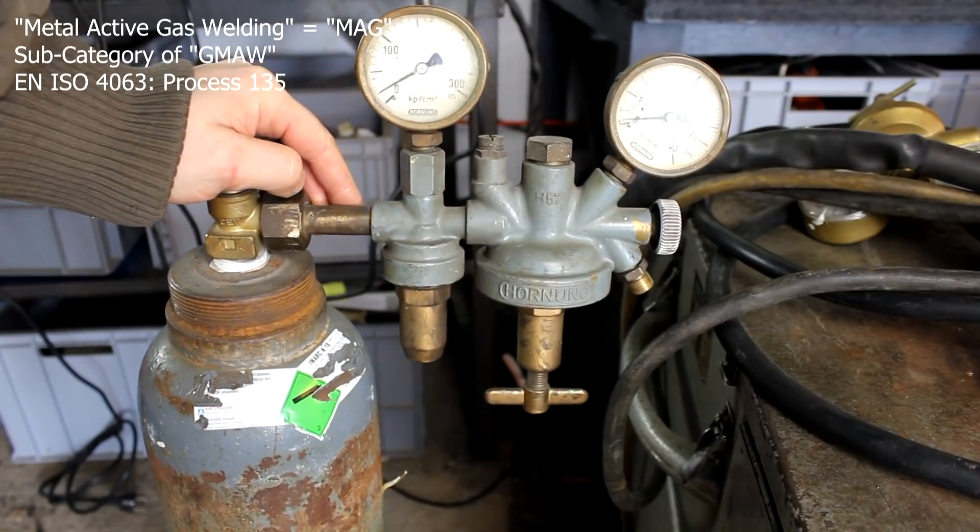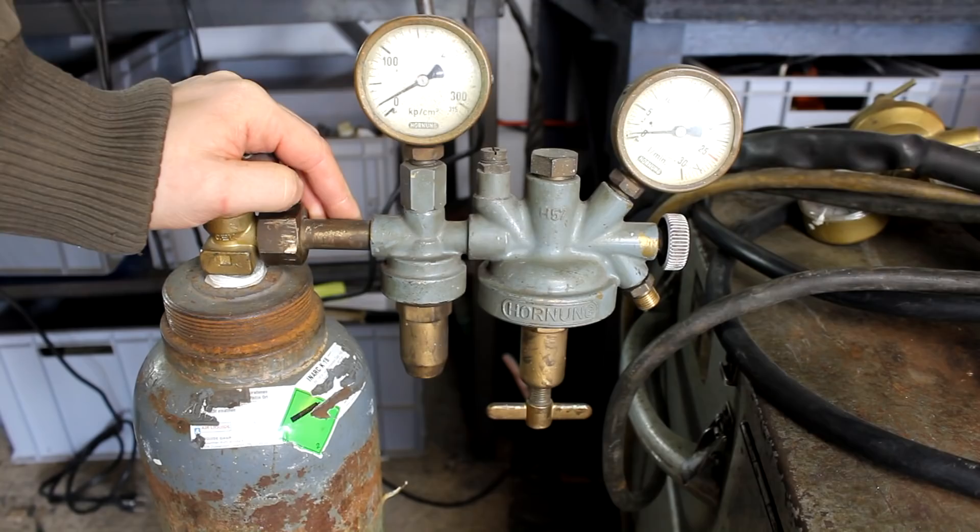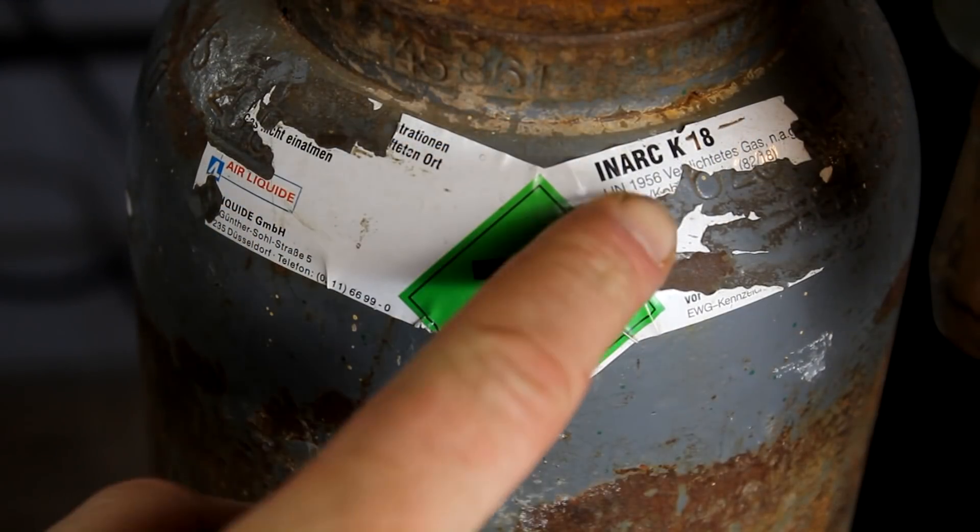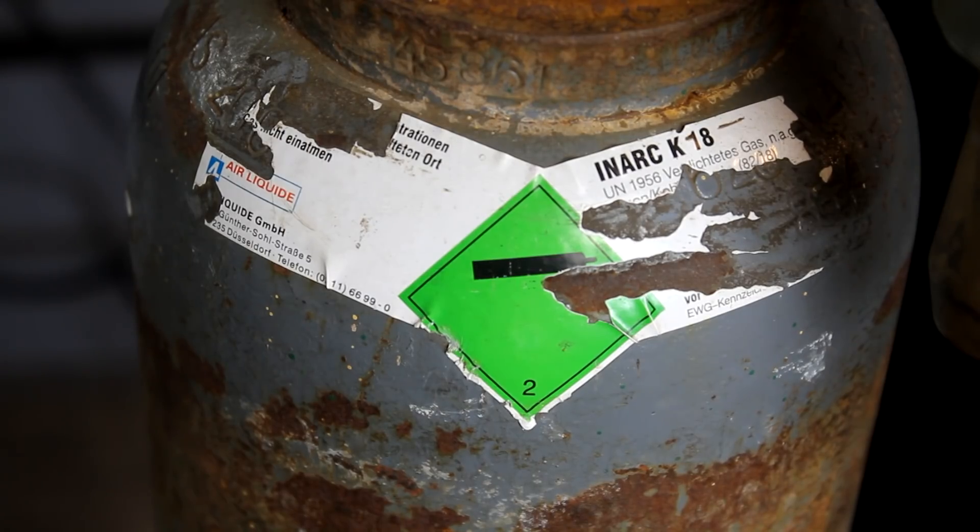While the average guy in a shop actually does MAG welding, metal active gas welding. And he does that, for example, with 100% CO2 or a mixture of inert and active gas like argon and CO2, like in this case here with 18% CO2.